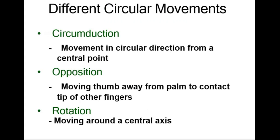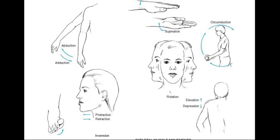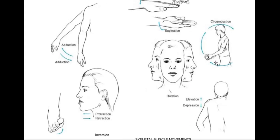For example, pronation is an internal movement and supination is external movement of the palm. Different circular movements include circumduction, opposition, and rotation — circumduction is movement through 360 degrees, rotation is right to left. Also elevation and depression, retraction and protraction.